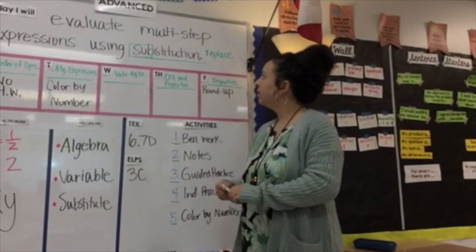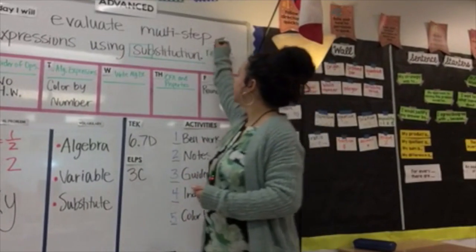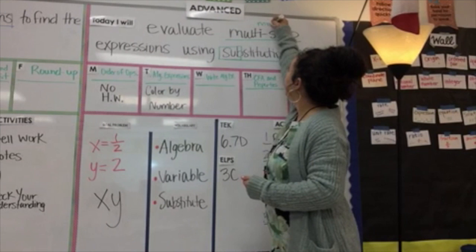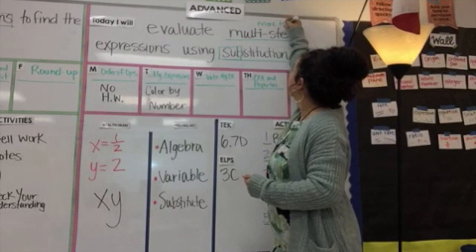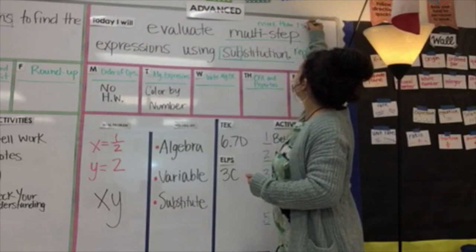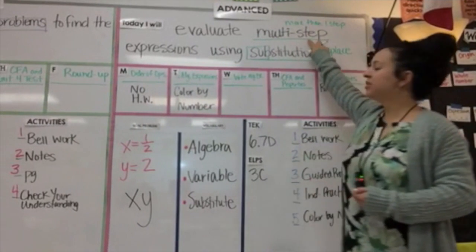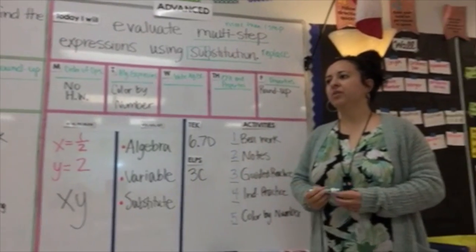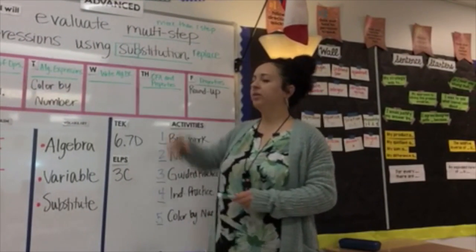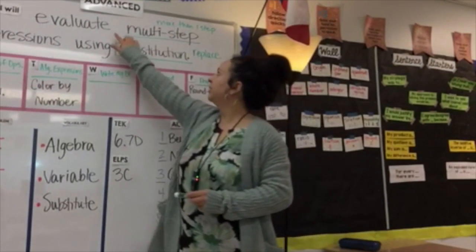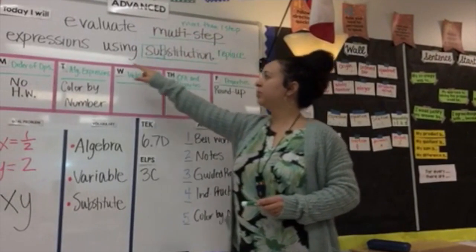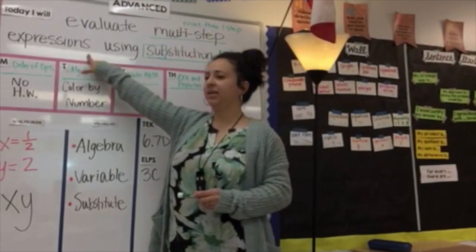Tyrus? Multi-step. Multi-step just means more than one step. It's not just one step to solve it — it's more than one. Multi — more than one step. So you're going to evaluate more than one step expressions, like we did yesterday.